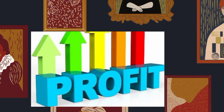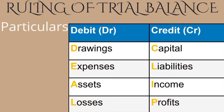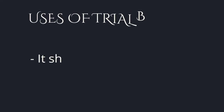Do not forget that in trial balance you credit profit. Now let's go to the ruling of trial balance. It's in this particular order: the first column is particulars, then you have the debit and the credit. As a guide in ruling your trial balance, you debit drawings, expenses, assets, and losses; and you credit capital, liabilities, income, and the rest.